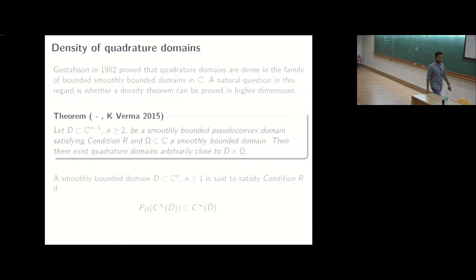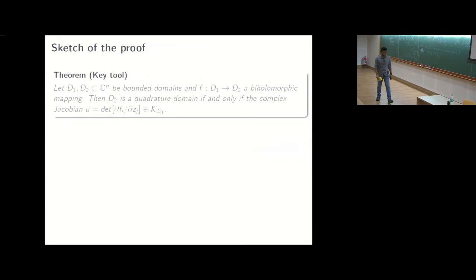Okay, so I have eight minutes so I think I can run through a sketch of the proof. The key tool that is being used here is, good that I didn't erase this part, the key tool that is being used is this theorem which says that if you have a biholomorphic mapping from d1 to d2, then d2 is a quadrature domain if and only if the Jacobian is in the Bergman span. So if you think about it, it can be thought of as a generalization of maybe this particular lemma which just talks about the very special case when f is the identity self-map. So this is the key tool that we will be using in the proof of this. I'll not be able to do justice to this proof anyway so I'll just try to give a broad sketch.